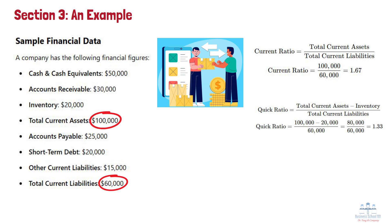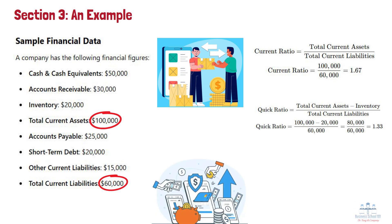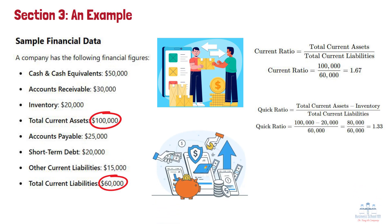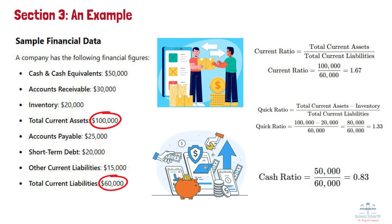Finally, the cash ratio, being the most conservative liquidity measure, considers only cash and cash equivalents. To calculate it, we exclude both inventory and accounts receivable from current assets. As a result, the cash ratio is 0.83, meaning the company has enough immediate cash to cover 83% of its current liabilities.